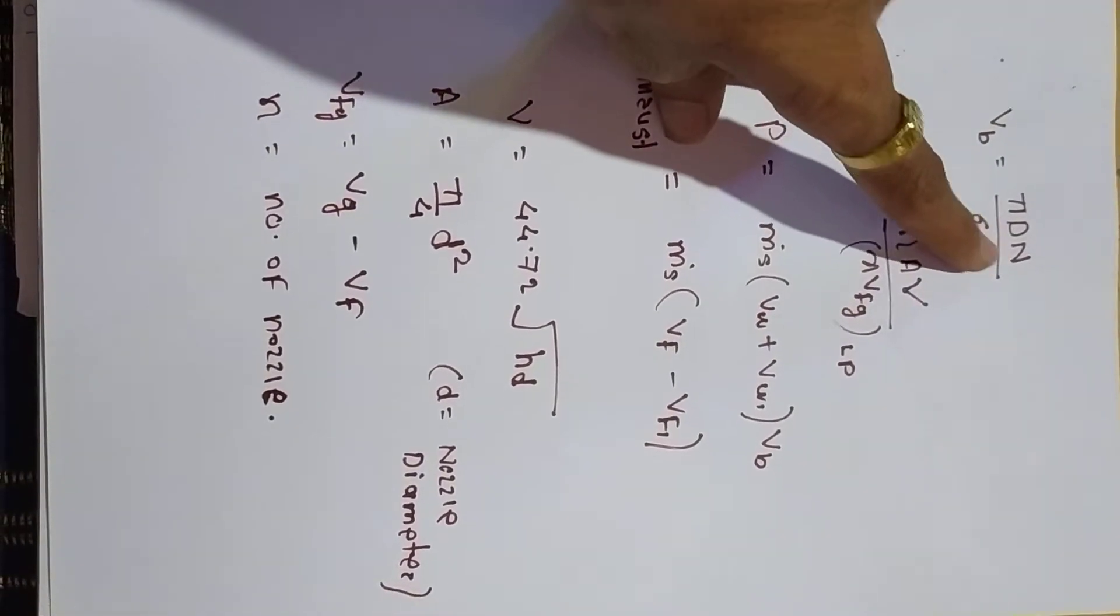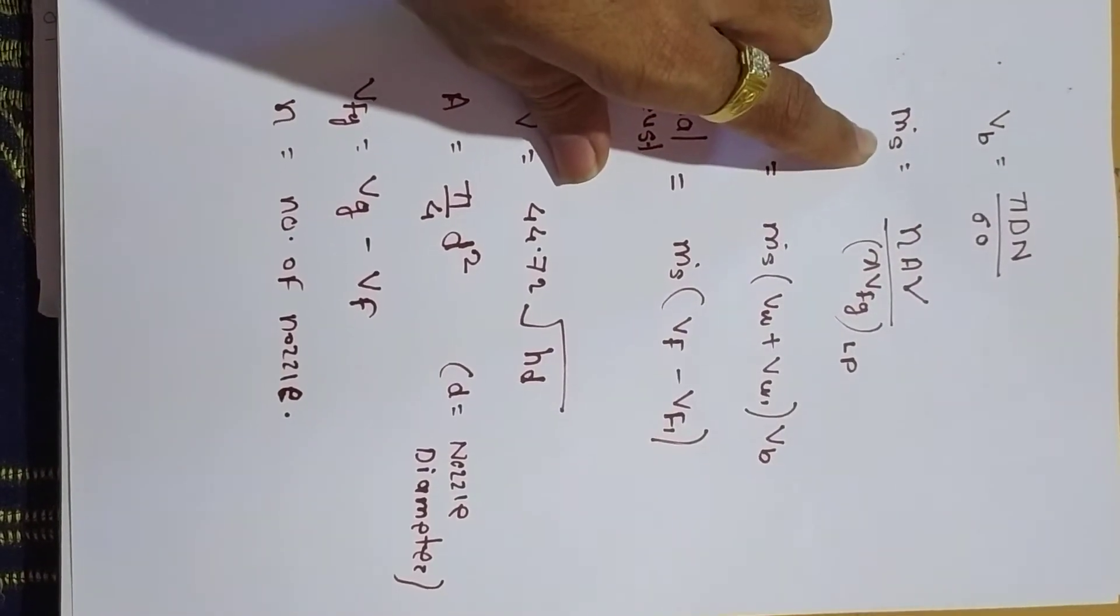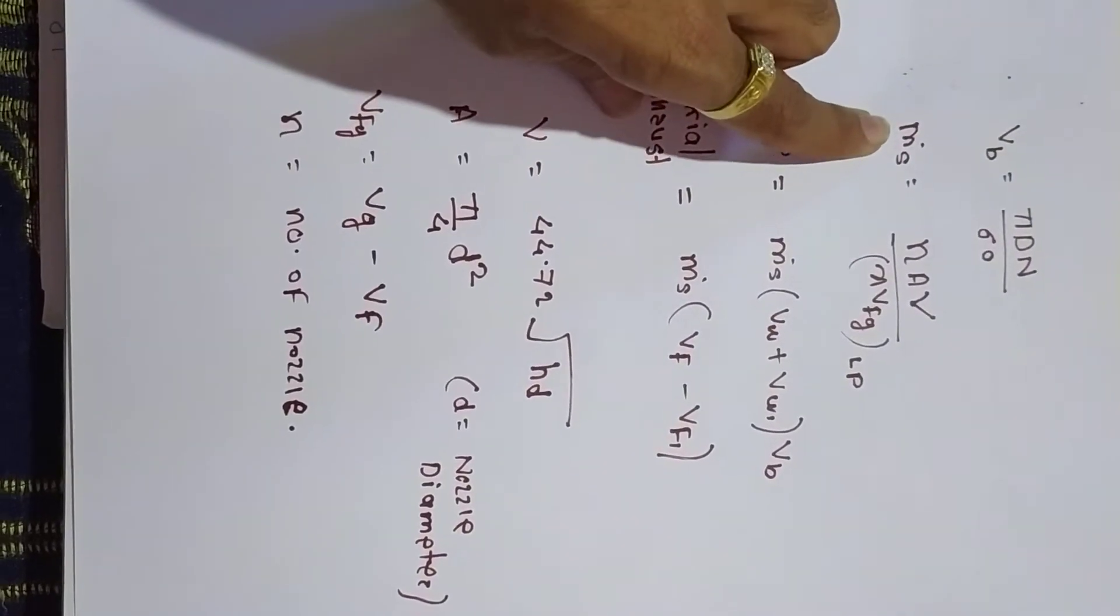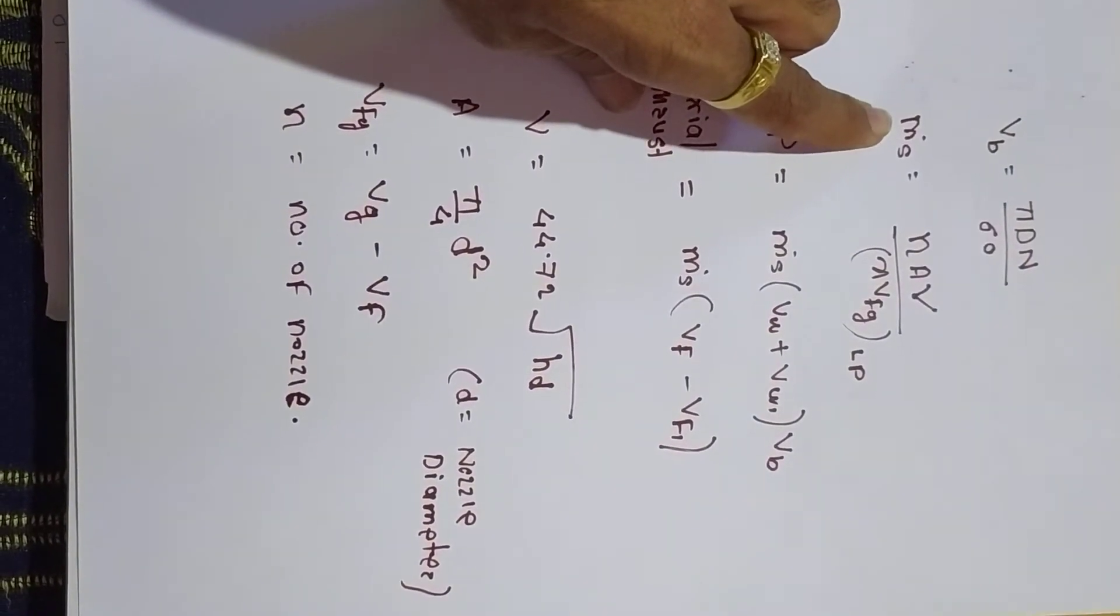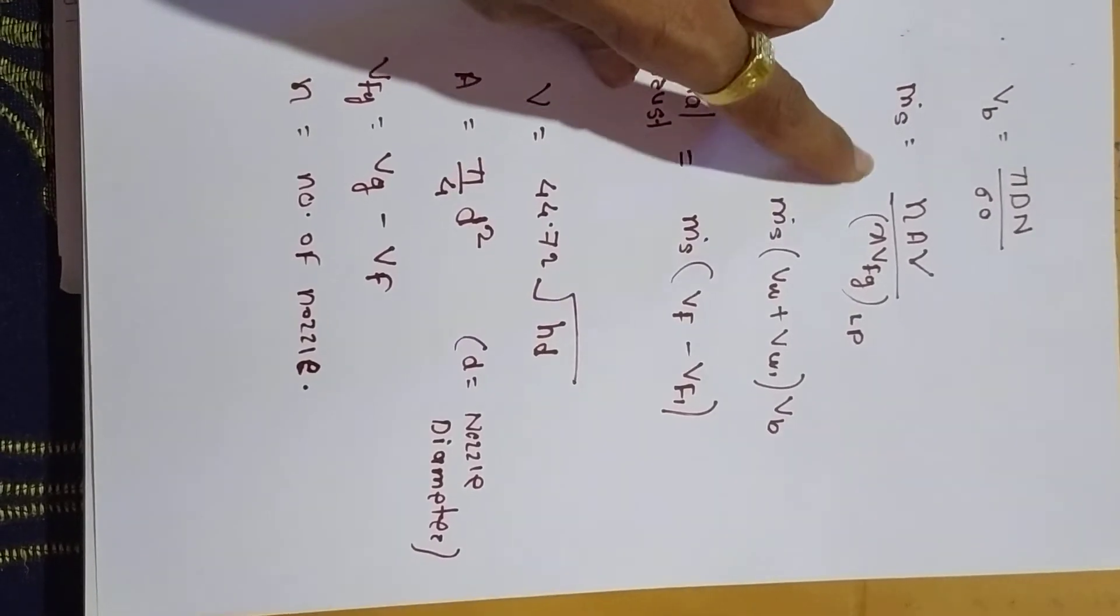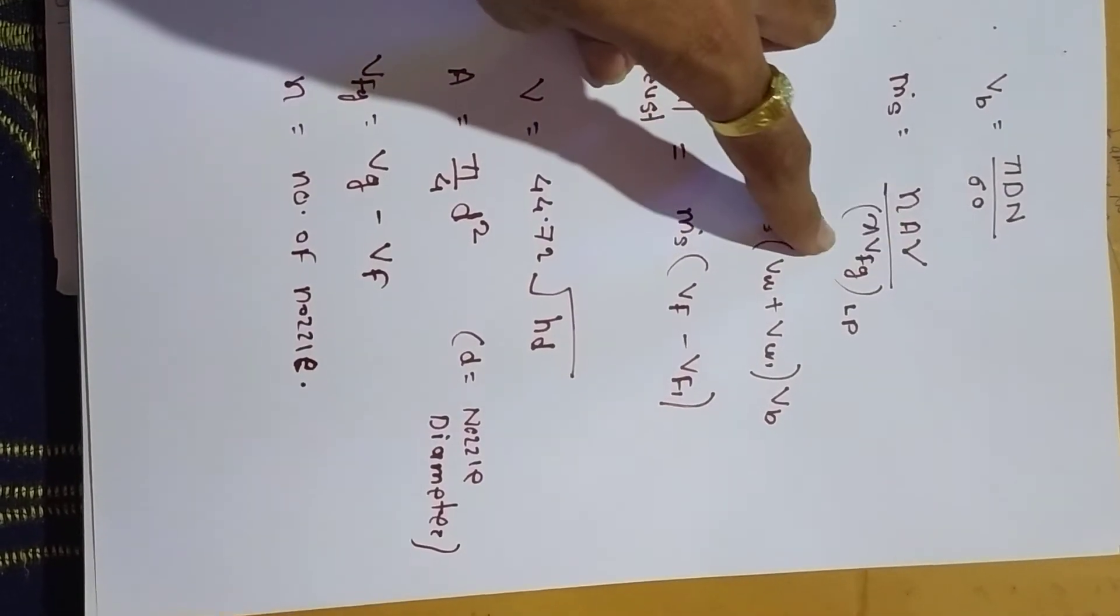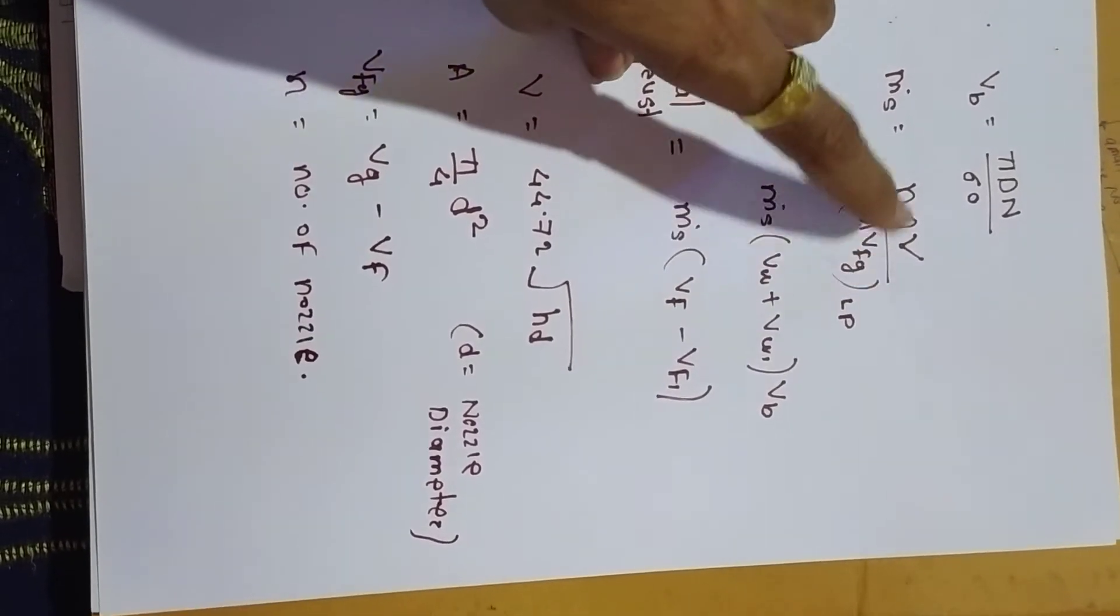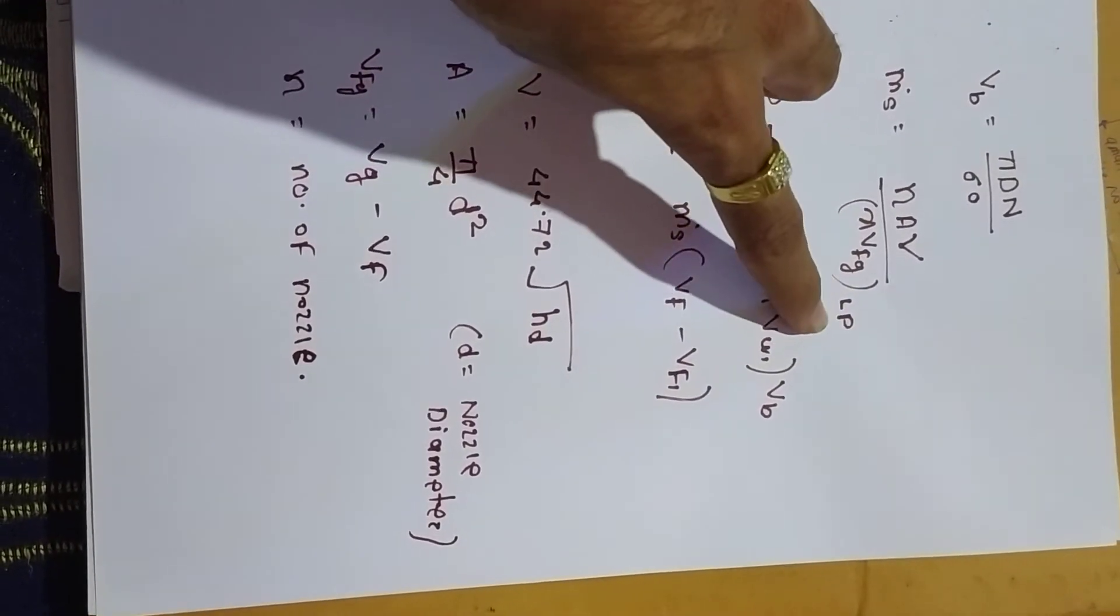In previous numericals, the mass of steam was given. But if mass of steam is not given, ms equals N A V divided by X times VFG, where the value of X and VFG is taken at low pressure (LP).